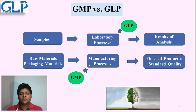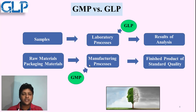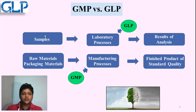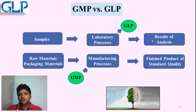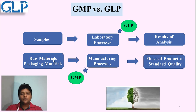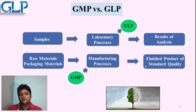There is another related term called GMP — Good Manufacturing Practice. The basic difference between GMP and GLP: in GLP, a sample is sent to the laboratory for testing where GLP is implemented, the test is performed per regulatory requirements, and a report is sent for result analysis. In GMP, raw material or packaging material moves to the manufacturing area where GMP applies, the process is followed, and the finished product comes out.